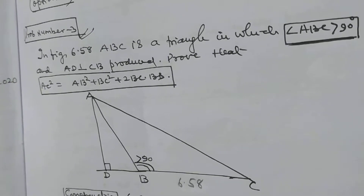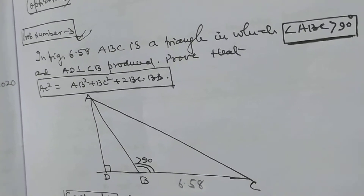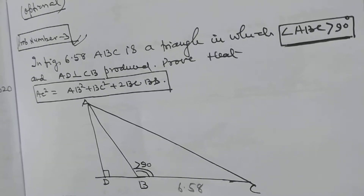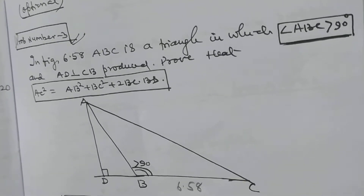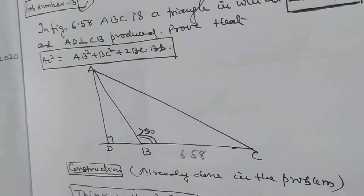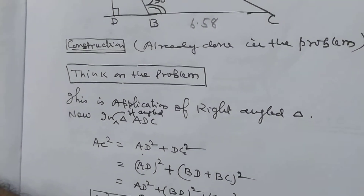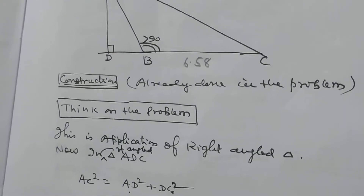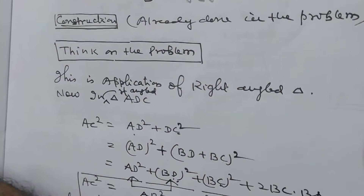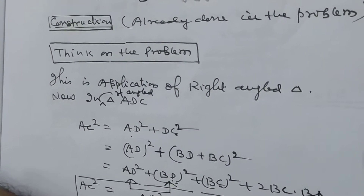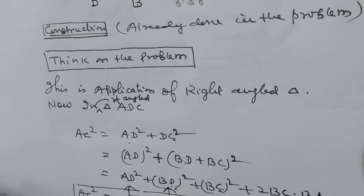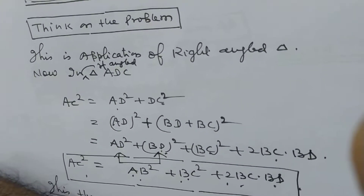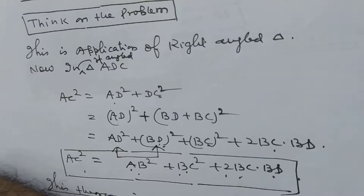We have drawn perpendicular from A to the produced part of BC. Now think on this problem. We have ADC as a right angle triangle. So AC² = AD² + DC². And DC is BD plus BC. So this becomes AD² + (BD + BC)² = AD² + BD² + BC² + 2·BC·BD.